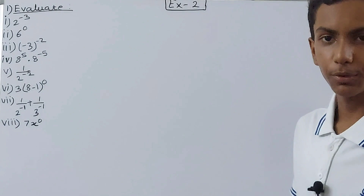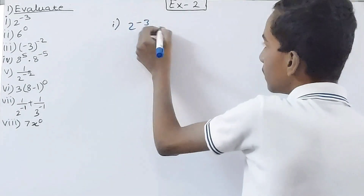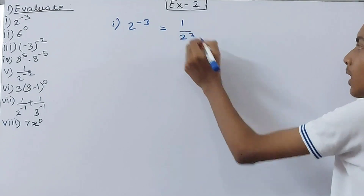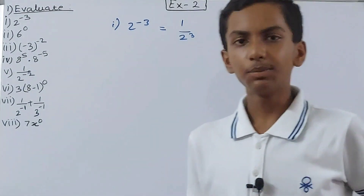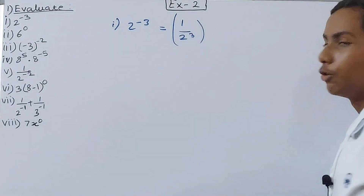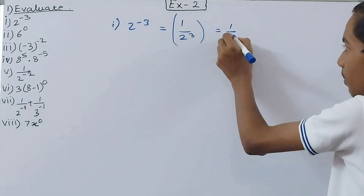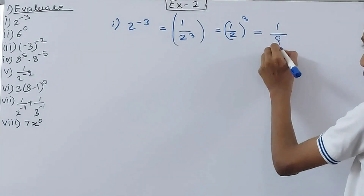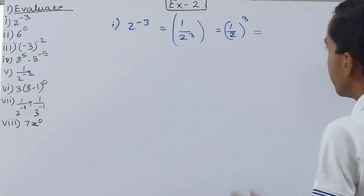Very simple — we have to use the rules of exponents that we've already studied. First we have 2 to the power minus 3. So 2 to the power minus 3 can be written as 1 upon 2 to the power 3. If there is a negative exponent on a number, we reciprocate it so that the power becomes positive. This becomes 1 upon 2 to the power 3, which equals 1 by 8.